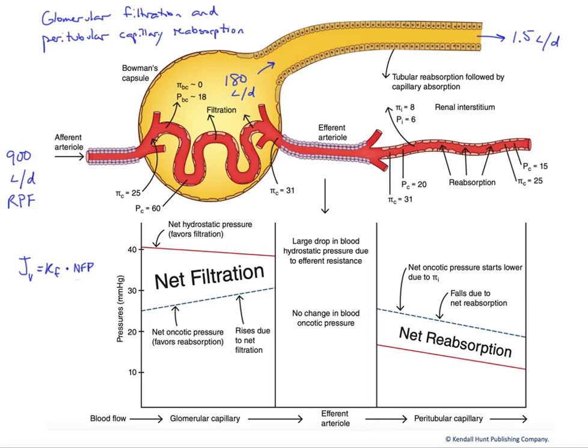In this series of figures and graphs, we want to look at the factors affecting glomerular filtration and then peritubular capillary reabsorption. At the top here, we have an anatomical schematic showing on the left glomerular structures and on the right, the peritubular capillaries that would surround the nephron segments.